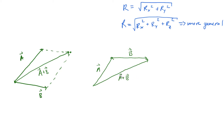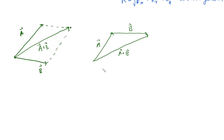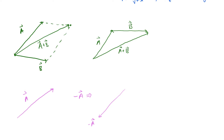Now we're going to define how to subtract vectors geometrically. First, let's define what a negative vector is. If vector a points in some orientation, placing a negative sign in front of it simply flips the whole direction 180 degrees — it points in the completely opposite direction. You can think of that as a geometric property: you're basically rotating the vector 180 degrees.